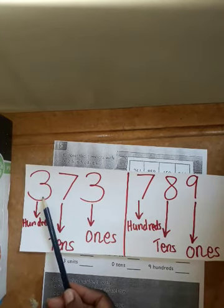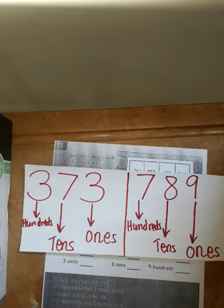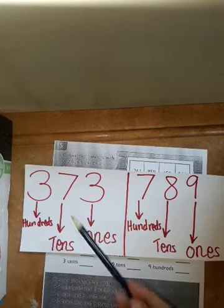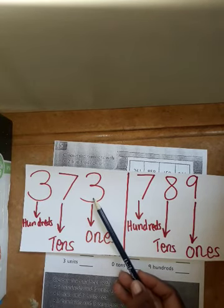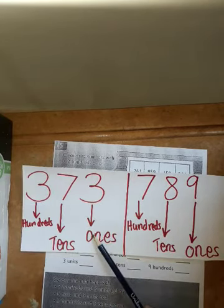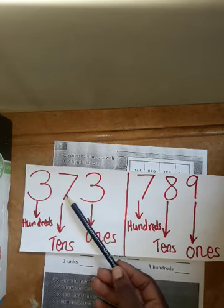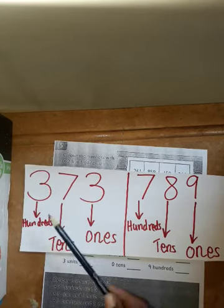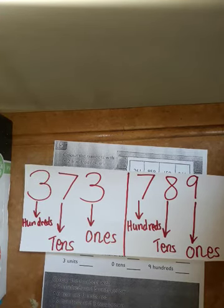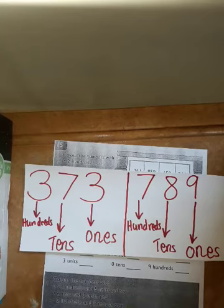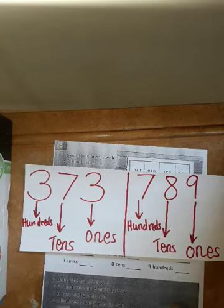Three hundred and seventy-three. Always remember that the last number at the end is ones, the second one from the end is tens, and the first one is hundreds. Because we're dealing with hundreds, hundreds will be the first one. If we're going to start dealing with thousands, thousands will be the first value, then hundreds, then...